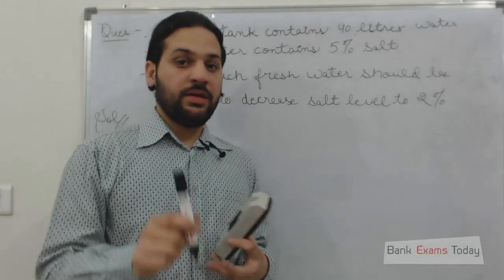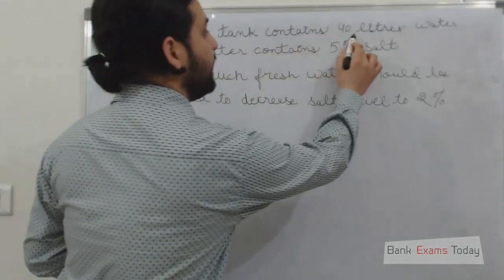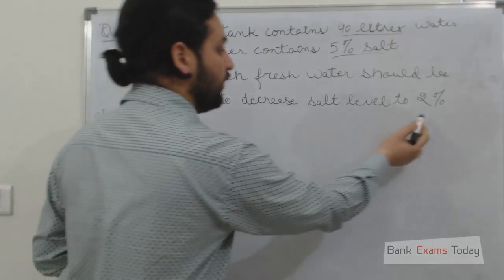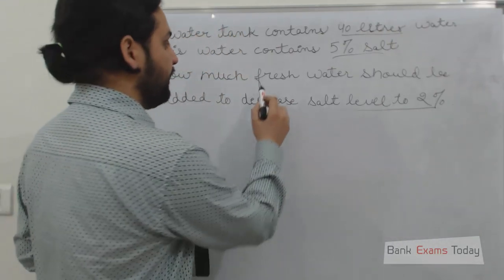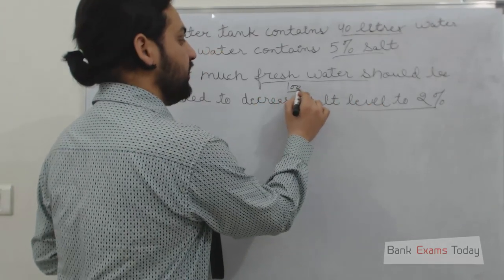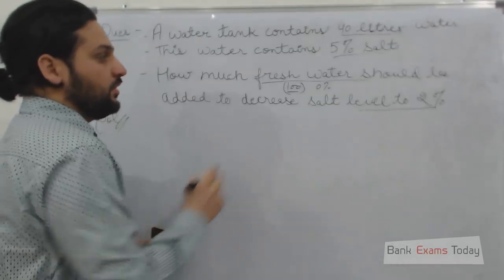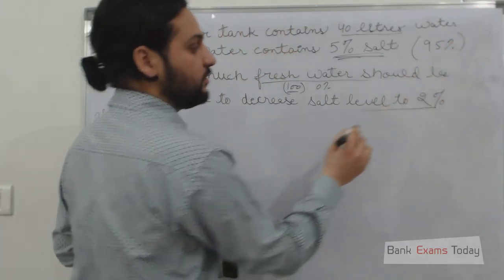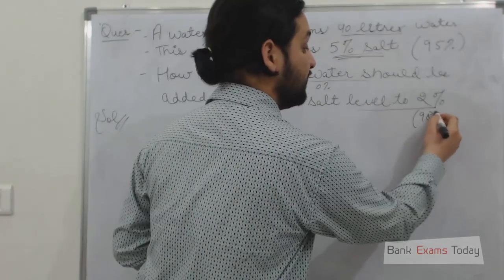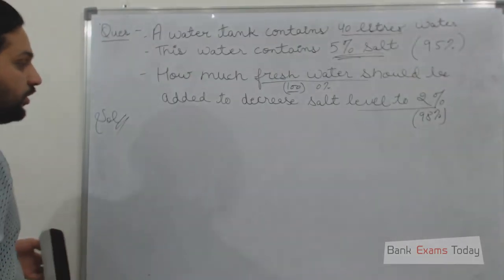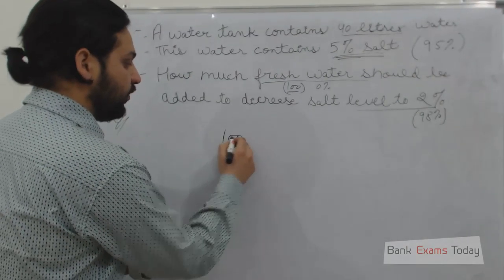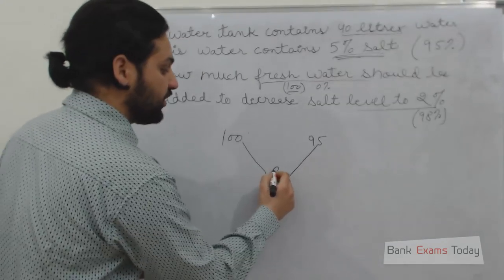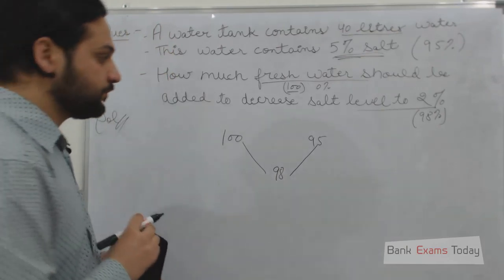Let's take another important example. A water tank contains 40 litres of water, and this water contains 5% salt. How much fresh water should be added to decrease the salt level? Fresh water contains 100% water, meaning 0% salt. The salty water with 5% salt contains 95% fresh water. What we want to achieve is a 2% salt level, which means 98% fresh water. So we want to mix 100% fresh water with 95% fresh water to make a mixture that contains 98% fresh water. So what would be the ratio?